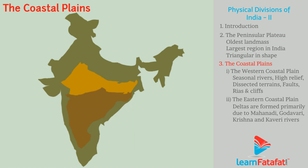The coastal plains can be further divided on the basis of location. The first division is the western coastal plains. The characteristic features of this region are as follows.